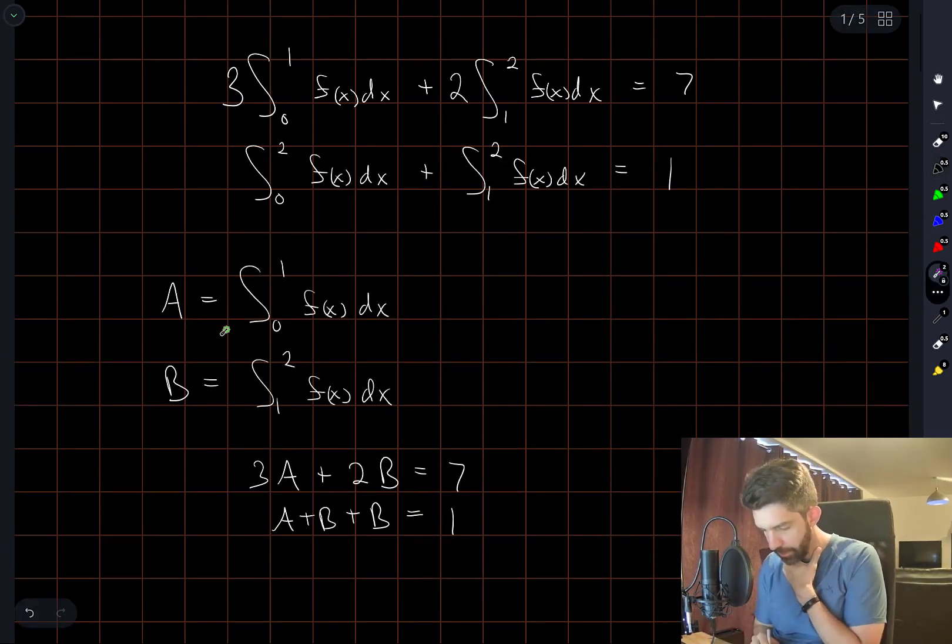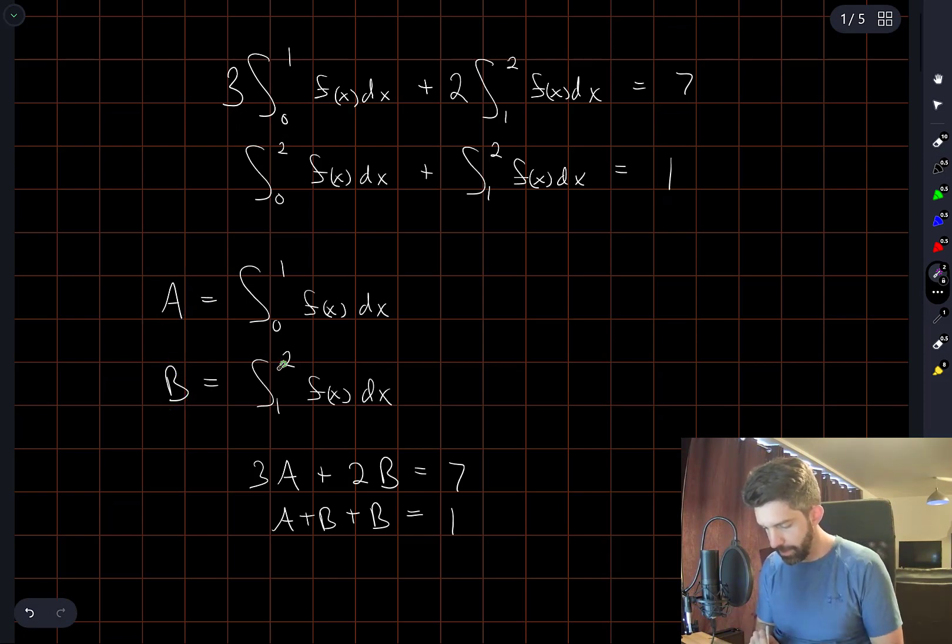So by declaring two variables, A and B, to be the integrals from 0 to 1 and from 1 to 2 respectively, we can rewrite everything here as a system of linear equations.